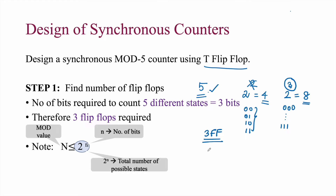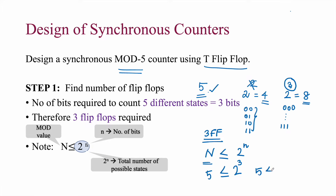Let us verify whether this is correct. Always remember: n should be less than or equal to 2 to the power n, where n is the modulus value, which is 5. So 5 ≤ 2^3 = 8. Yes, the condition is satisfied, therefore we can use 3 flip-flops to design a mod-5 counter.